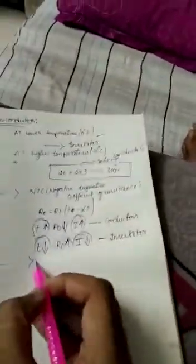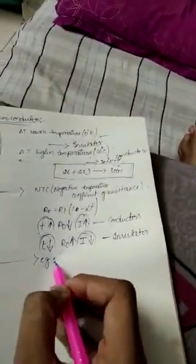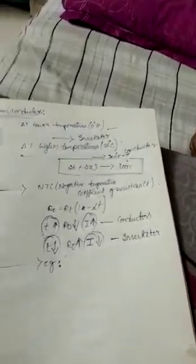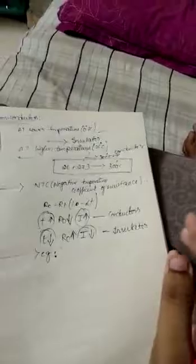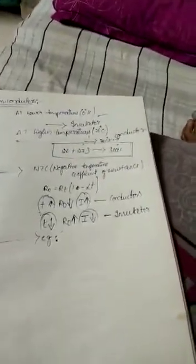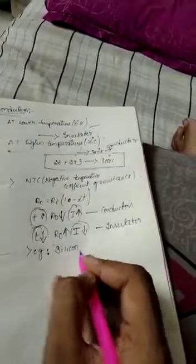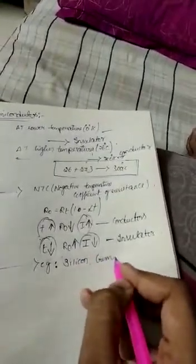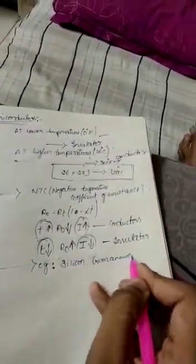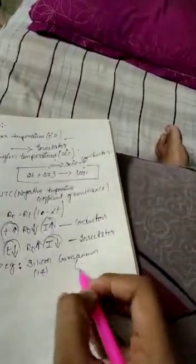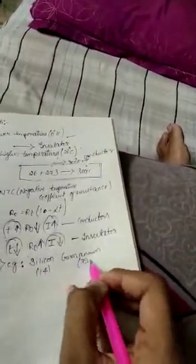Examples of semiconductors: the most popularly used semiconductors in digital and analog circuits and fabrication are Silicon and Germanium. Silicon has atomic number 14, and Germanium has atomic number 32.